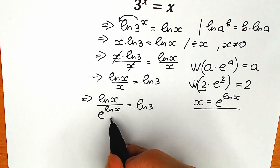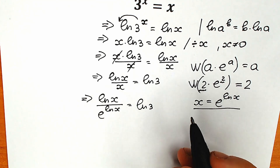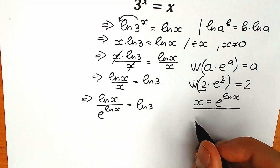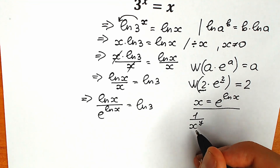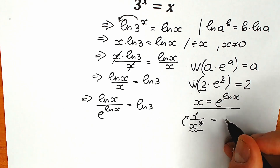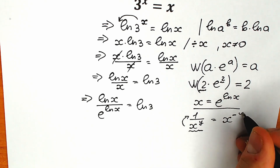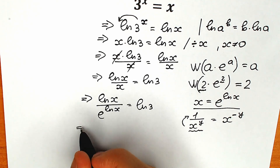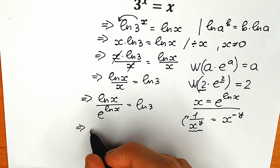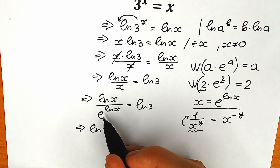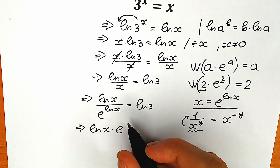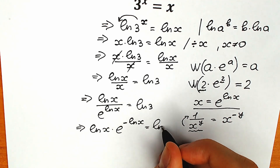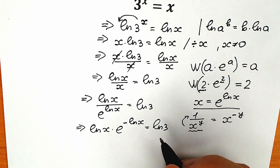The next thing we're going to do is bring the expression from the denominator to the numerator using the rule: 1 over x to the power y equals x to the power minus y. So we write natural log x times e to the power minus natural log x, equal to natural log 3.